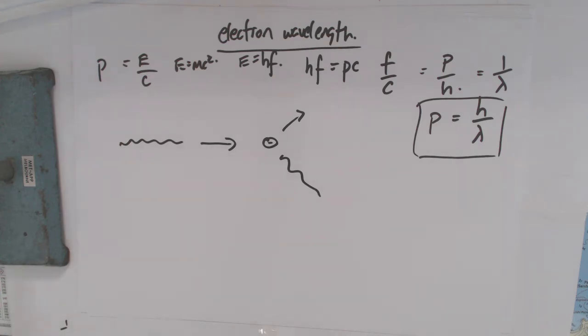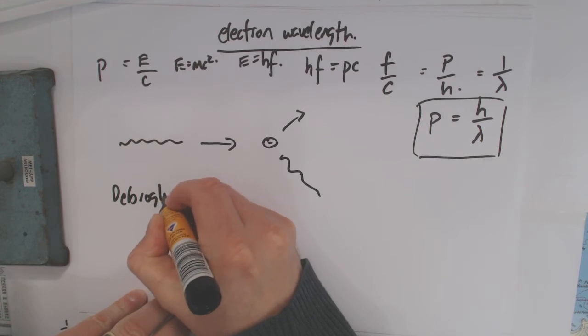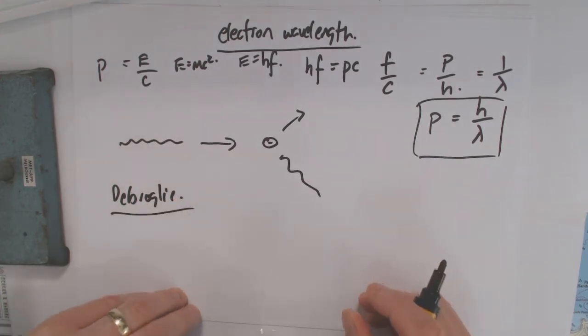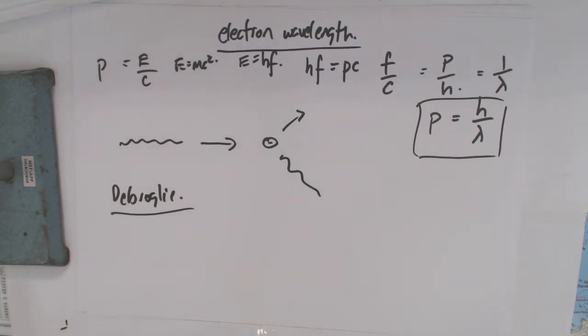Now, this next guy came along, de Broglie. We'll put this in here. And what he basically said, so we've looked at the momentum side and basically he said, well, maybe we can treat the electron then as a wave.